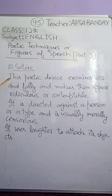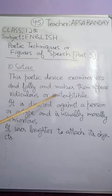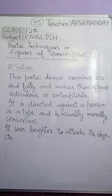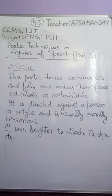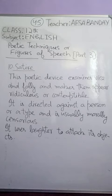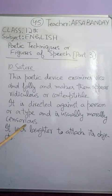The next poetic device is satire. Satire examines vice and folly — defects — and makes them appear ridiculous or contemptible. When defects are presented in a ridiculous, funny way, that's satire. But it is directed against a person or a type and is usually morally censorious — its purpose is not only to point out defects and follies in a comic way, but also to make people realize it is morally incorrect, so that it can be corrected morally.